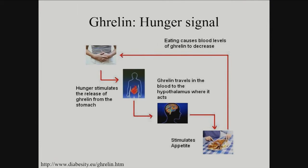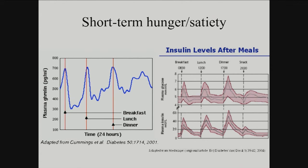Ghrelin is your hunger signal — it's produced by your stomach. When your stomach's empty, it basically travels from the blood to the hypothalamus and tells you, hey, I'm hungry, I want to eat. When you eat food, the levels of blood glucose regulate the level of ghrelin in your stomach. If you fill your stomach, your stomach stops producing ghrelin, so you don't get that signal to your brain and you're not hungry after you eat. You can see in the chart that plasma ghrelin in your blood spikes right before meals, and then immediately drops right afterwards — very short-term.